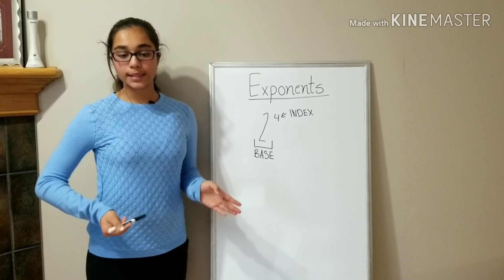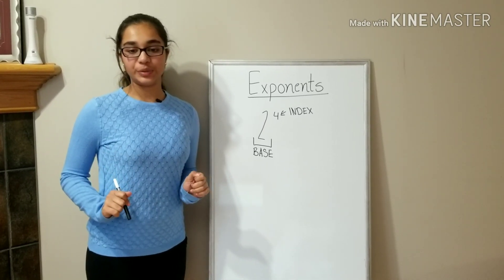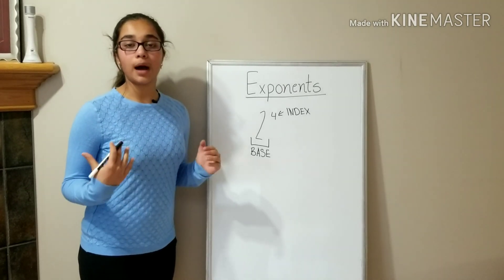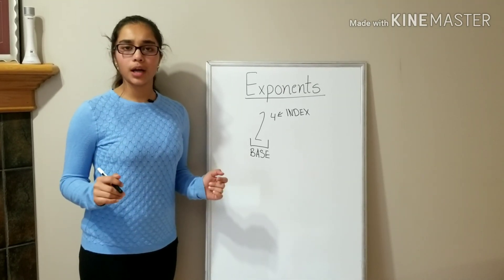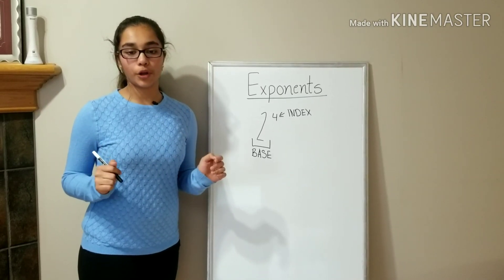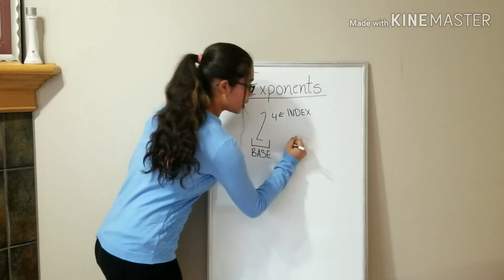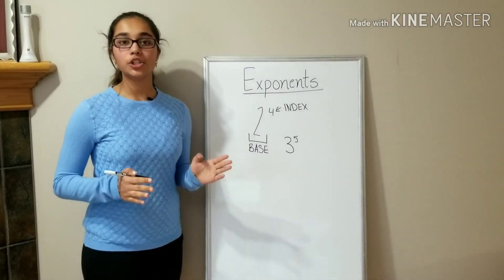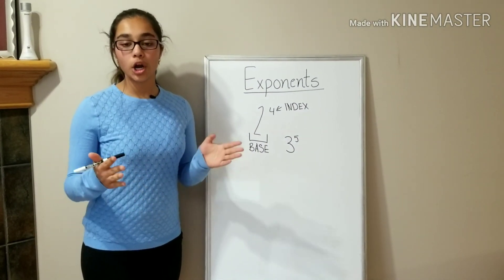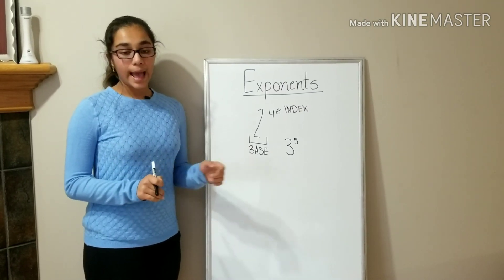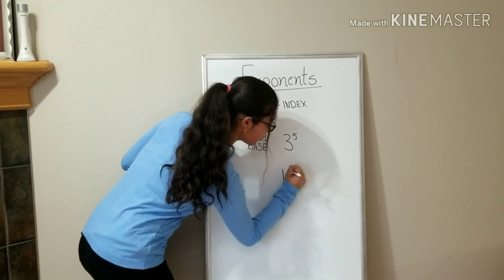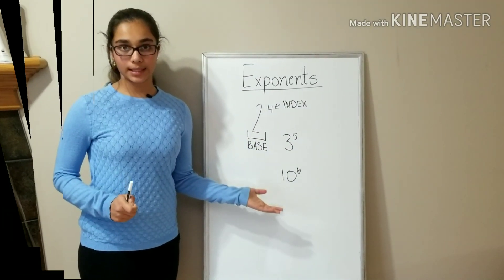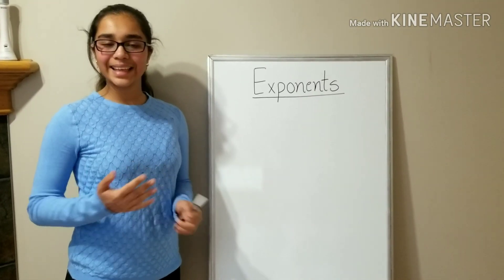When reading exponents, some interesting terminology is used. This exponent would usually be read as '2 to the power of 4,' or to make it easier, '2 to the 4th.' If we had another exponent, such as the one over here, this one would be called '3 to the power of 5,' or '3 to the 5th.' And this exponent would be called '10 to the 6th power.' Get the idea?